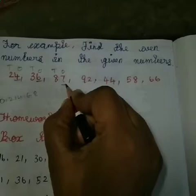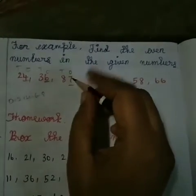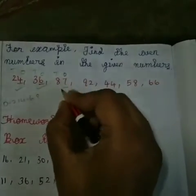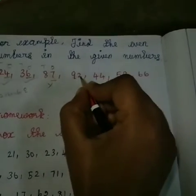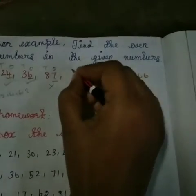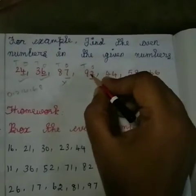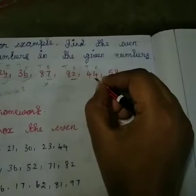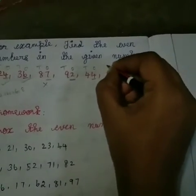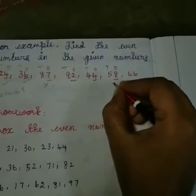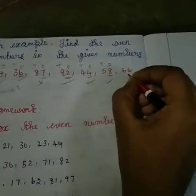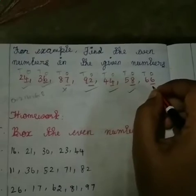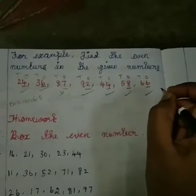See the next number: 87. In the ones place the number is 7. Is 7 an even number or odd number? 7 is an odd number, so 87 is not an even number — 87 is an odd number. See 92: the ones place is 2, and 2 is an even number, so 92 is an even number. In 44, the ones place is 4, so 44 is an even number. In 58, the ones place is 8, so 58 is an even number. In 66, the ones place is 6, so 66 is an even number. This is the way you find even numbers in two-digit numbers.